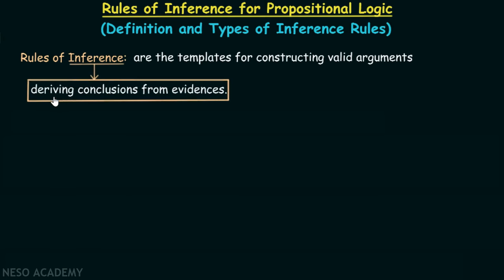Inference means deriving conclusions from evidences. It is actually deriving conclusions from evidences. Evidences are the premises — they are the assumptions. On the basis of those assumptions, we are trying to derive conclusions, and that is what inference is all about.